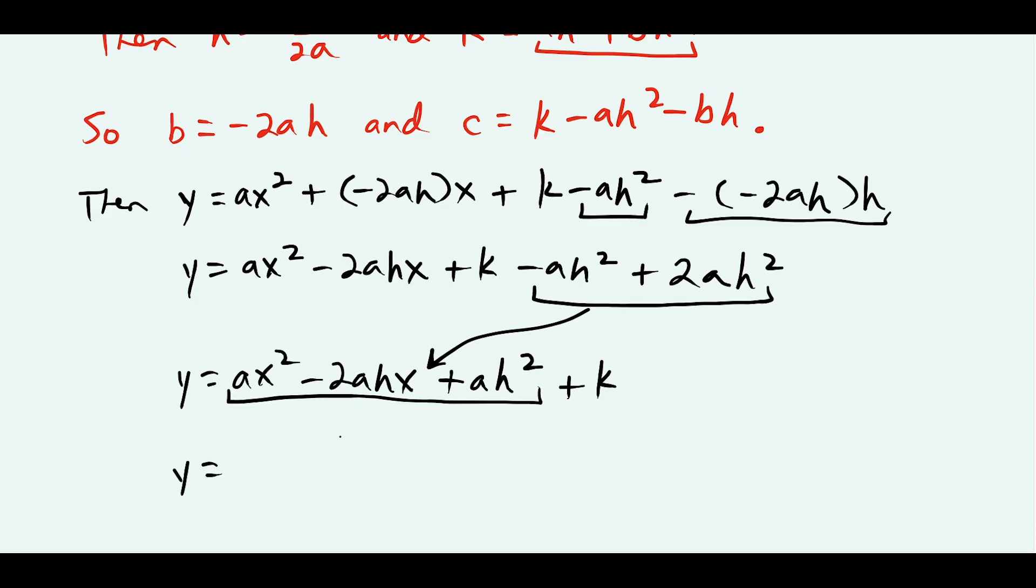Now I want to focus on these three terms. I want to factor out the common a term. So I have a times (x squared minus 2hx plus h squared), and the plus k is at the end. So I just factored out the common a.